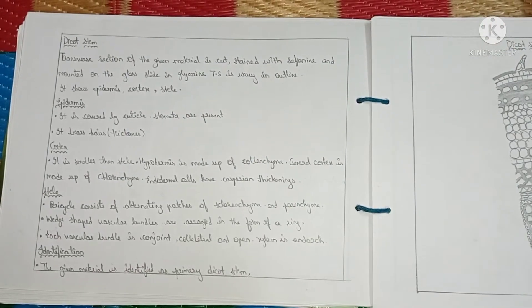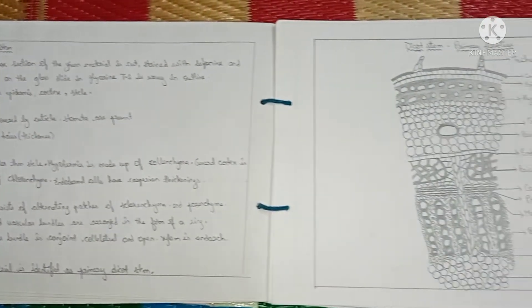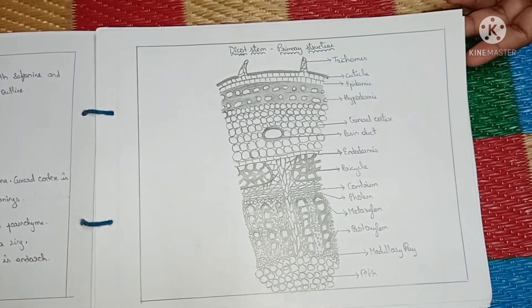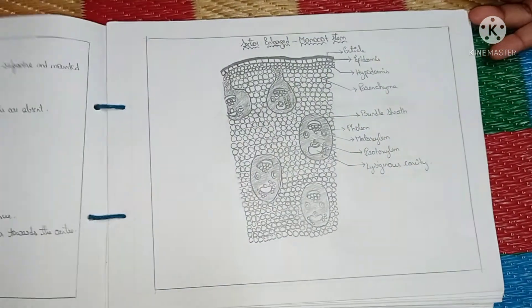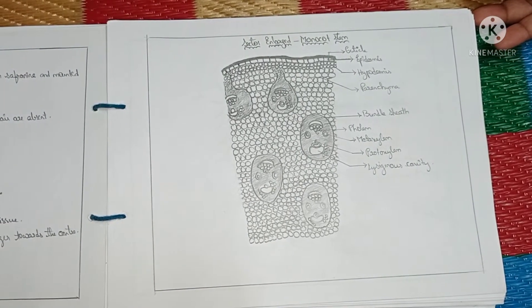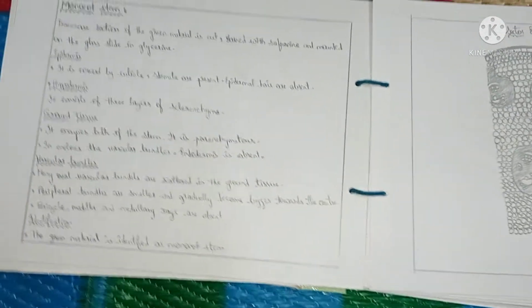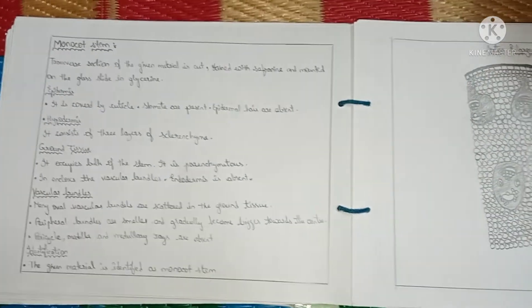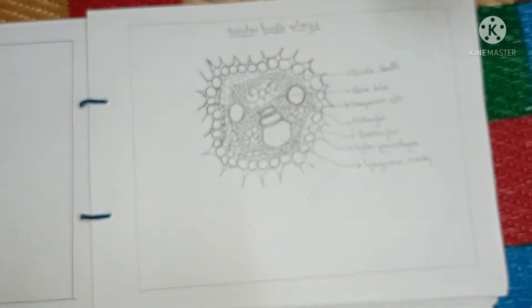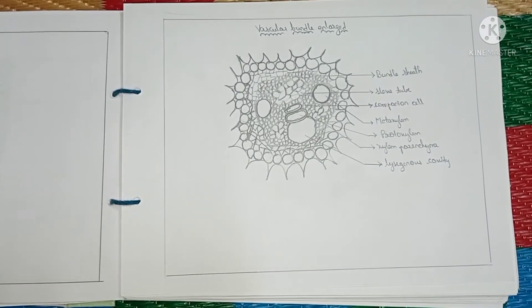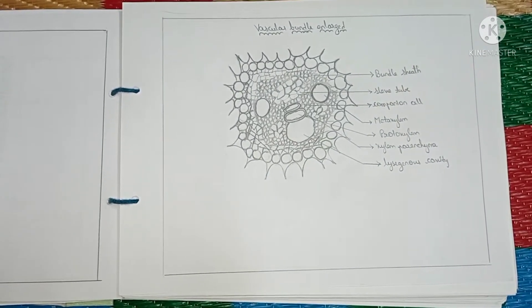Stem anatomy covers details of dicot stem and diagram of dicot stem, then diagram of monocot stem and details of monocot stem. The vascular bundle enlarged diagram and the previous stem diagram should appear together on one page.